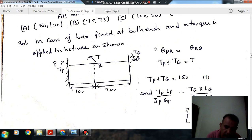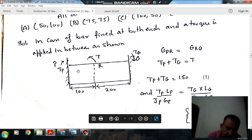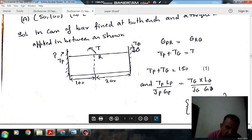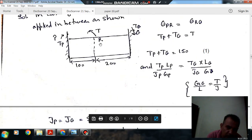Now from the torsion equation T by J equals theta by L, we have theta P equals Tp times Lp divided by J times G. Lp is this length, Tp is this torque, J is the polar moment of inertia, and G is the modulus of rigidity. Similarly for the other portion, it is Tq times Lq divided by J times G.